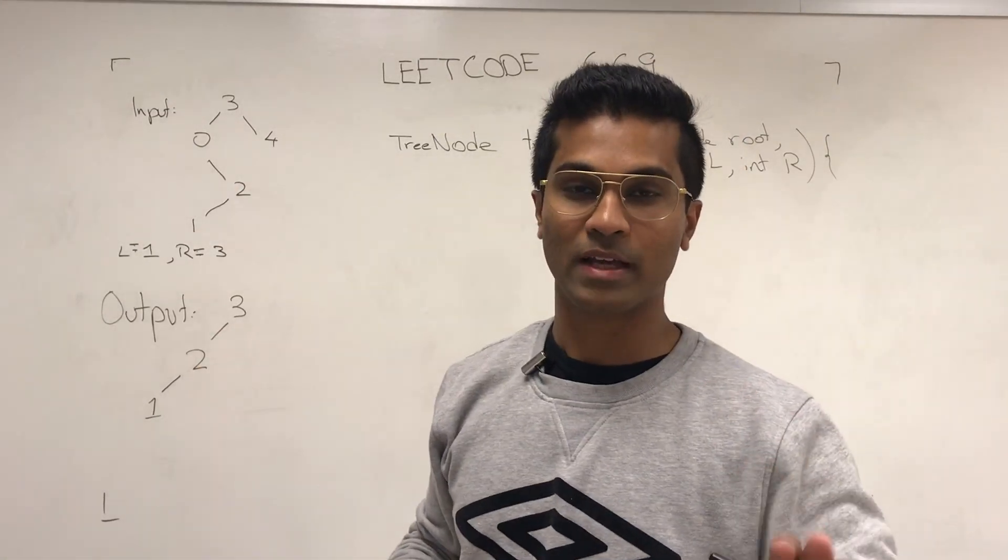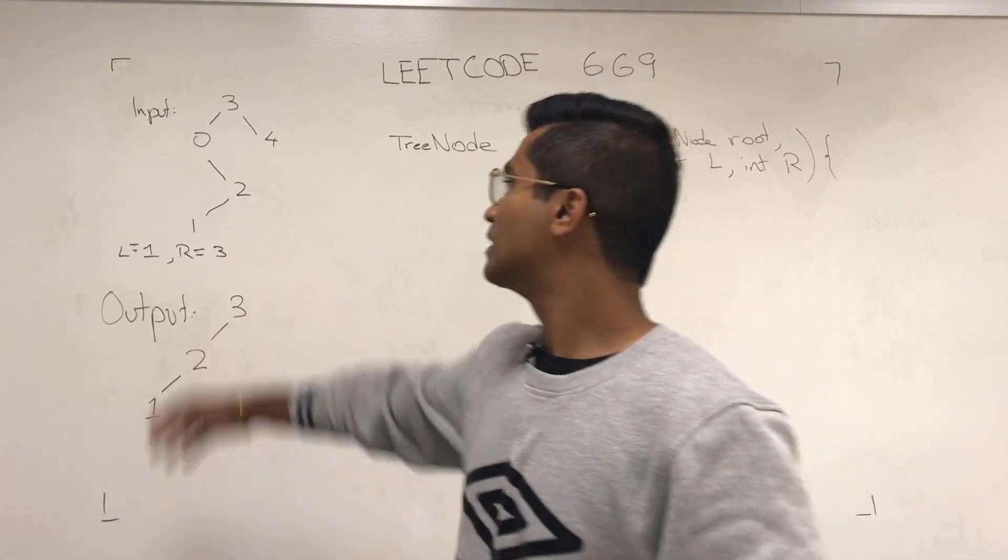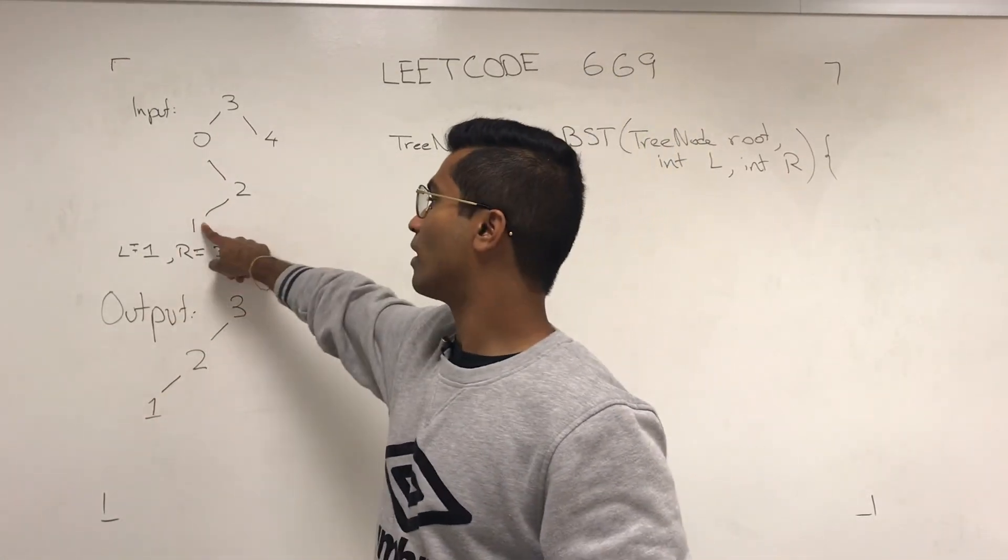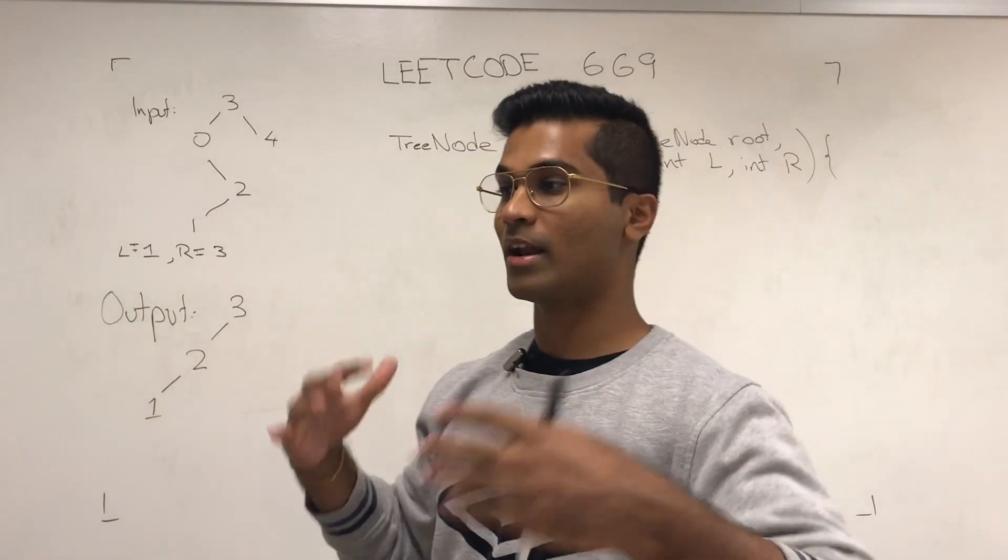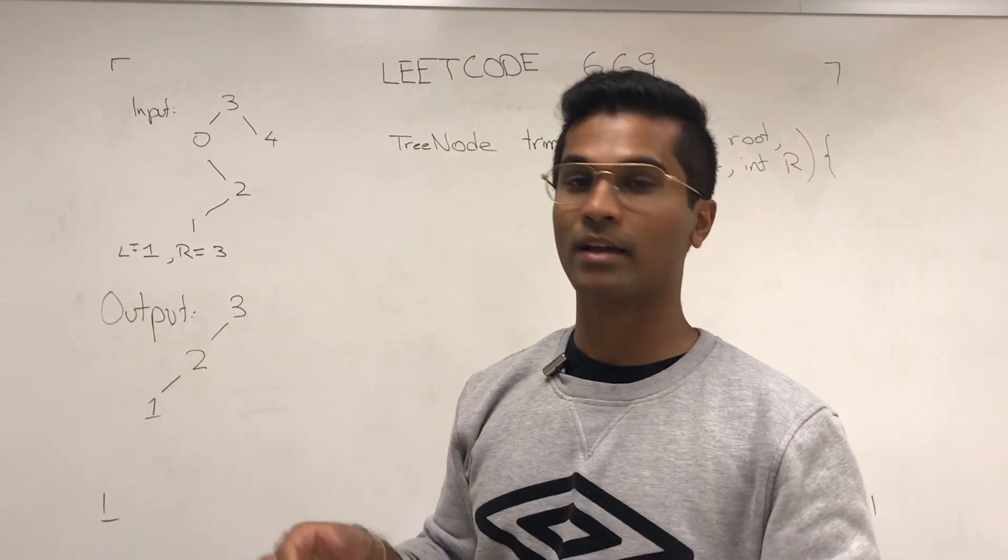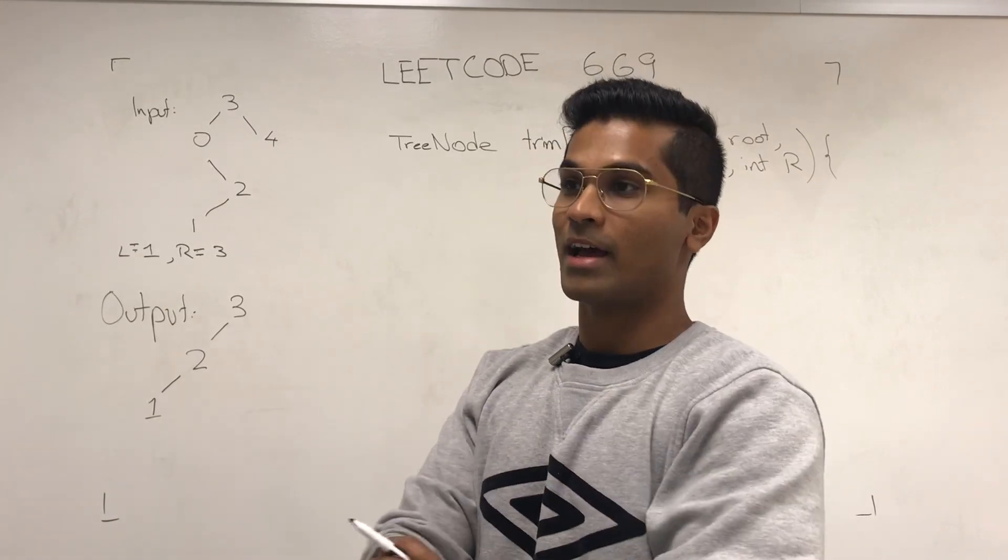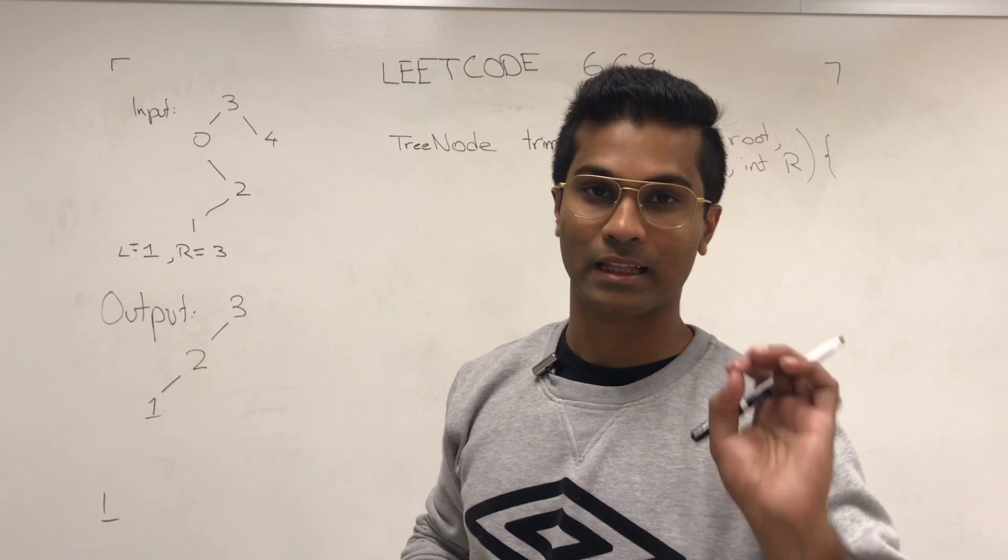Zero is going to say, okay, three, hold on. Let me ask my left and my right child. And then two is going to say, okay, hold on, zero, let me ask my one. Same way four, and when all the recursive stacks come back, we can simply put their answer that comes back as the original nodes left and right.